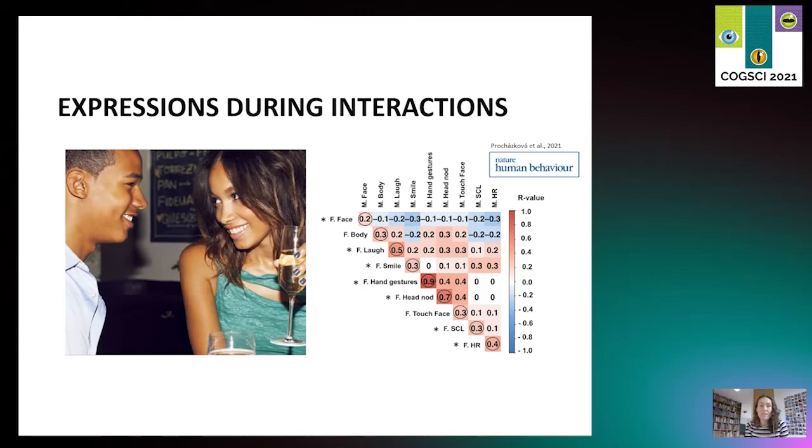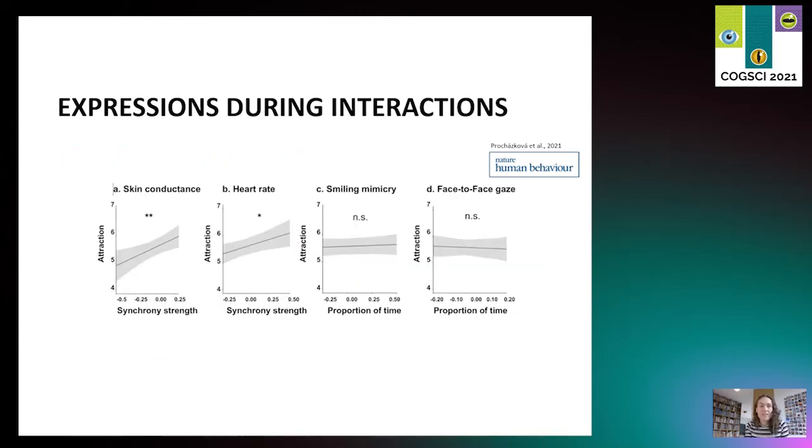The key question is: what is it good for—the mimicry of all these behaviors? Did it help? In fact, it did, but only for the subconscious levels. So specifically, the synchronization in physiology was positively related with mutual attraction and dating success, but the mimicry of smiles not so much. So this shows that it's really important to look at emotions at different levels. We recently replicated this study in the lab where participants played a prisoner's dilemma game, and we showed that physiological synchrony has positive consequences for cooperative success.